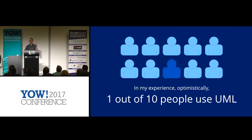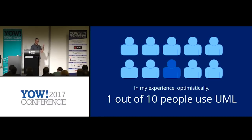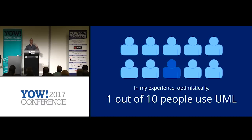I'm seeing universities no longer teaching it because they realize we don't use it. It's accelerating the death spiral of UML. People perceive it's complex, it's very precise, and that precision comes at a cost. There are way too many diagram types. The best version of UML is like version 1.1 from 15 years ago. It's just hard, it's just complex, and it's overkill for what a lot of people want to do.